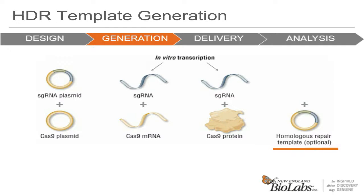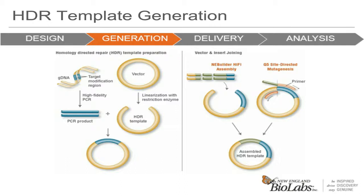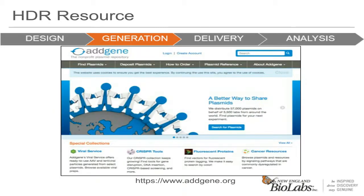The methods for creating HDR templates will sound very familiar. The first is essentially a traditional cloning workflow involving the ligation of a PCR product into a restriction enzyme-linearized vector. Two alternate methods are NEBuilder HiFi and Q5 site-directed mutagenesis. Addgene is a very good resource for homology-directed repair guides. Most commonly plasmids are used for HDR templates, but increasingly single-stranded DNA is being used at high efficiency, especially for small insertions. These can be oligo-based for insertions less than 50 nucleotides.